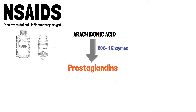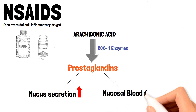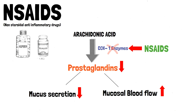Prostaglandins have a lot of useful effects in our body — they are involved in mucin production and mucus secretion in our stomach, and they are also responsible for maintaining the mucosal blood flow. When we take NSAIDs, some of them directly inhibit the Cox-1 enzyme, preventing prostaglandin synthesis from arachidonic acid. Because prostaglandin synthesis is decreased, mucus secretion and mucosal blood flow into our stomach will also decrease.